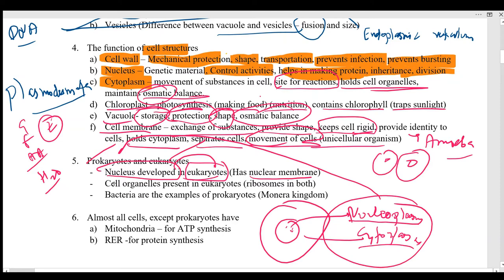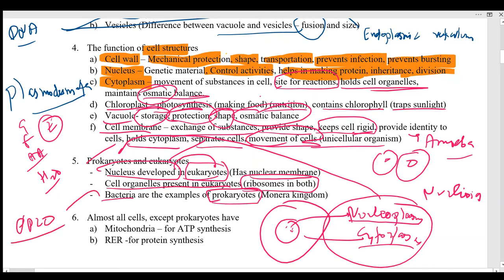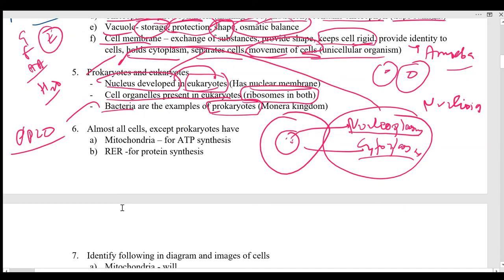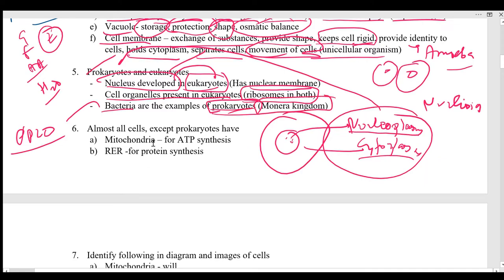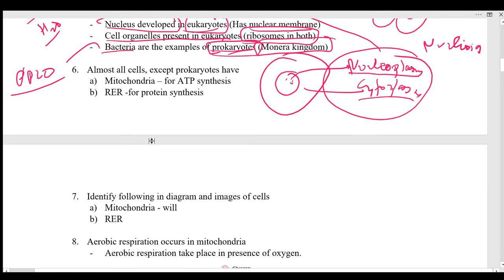When there is no nuclear membrane, the nucleoplasm mixes with the cytoplasm — these kinds of cells are called prokaryotic cells. Instead of calling it a nucleus, we call it a nucleoid. Cell organelles are present in eukaryotic organisms. Ribosomes are present in both prokaryotic and eukaryotic cells. Bacteria are the best examples of prokaryotic organisms, as are mycoplasmas. Prokaryotes generally come under the kingdom Monera.